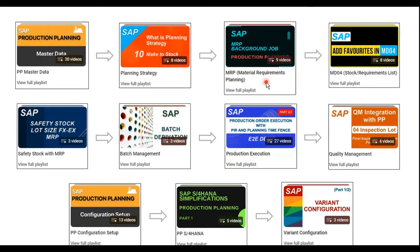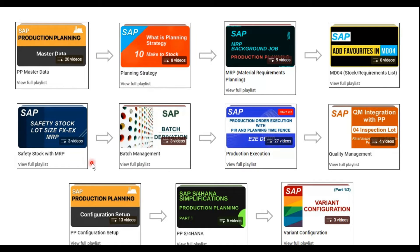Once you have an overview of master data and business processes for planning strategies, you can move on to Materials Requirement Planning, where you'll learn how planning works and what settings need to be managed to execute a proper MRP run. After MRP, move on to MD04, where you evaluate the results or output of the MRP run. After that, you can start with lot sizing concepts — fixed lot size, lot for lot, reorder quantity — along with safety stock planning, then proceed to batch management.